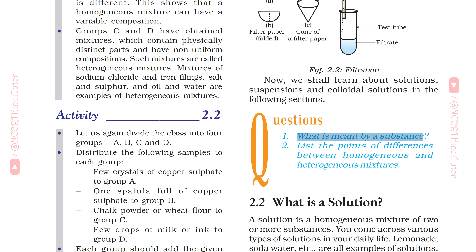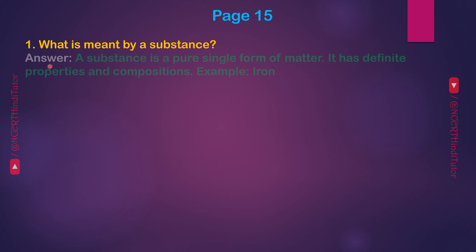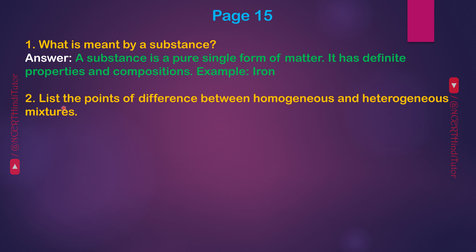What is meant by a substance? Answer: A substance is a pure single form of matter. It has definite properties and compositions. Example: Iron.